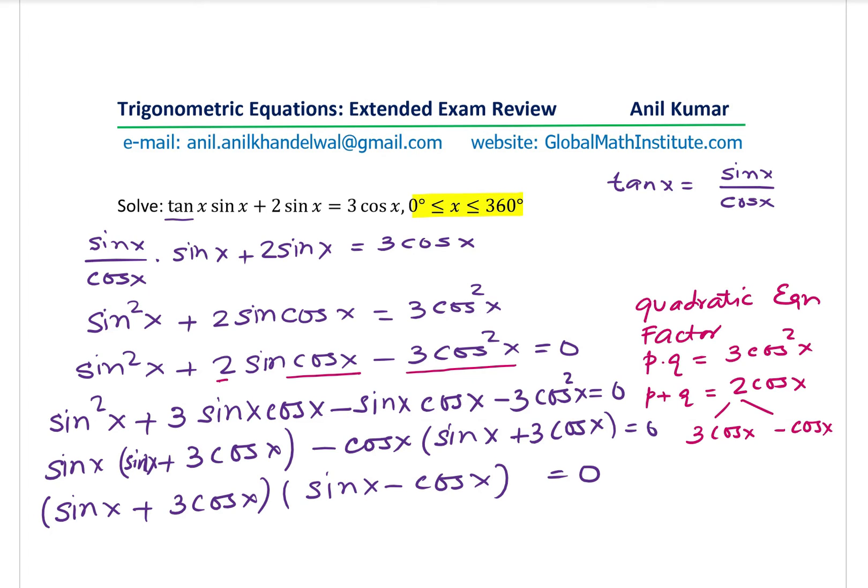To find the solution, we have to equate each to 0. So either sin x equals to minus 3 cos x, or we could do sin x equals to cos x. Now let's calculate the angles based on the condition given to us. When I write sin x equals to minus 3 cos x, that basically means that sin x over cos x is minus 3. And when I write sin x equals to cos x, that basically means that tan x is equal to 1.